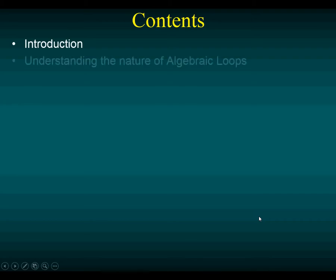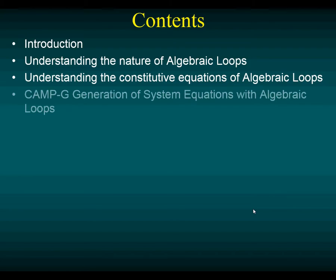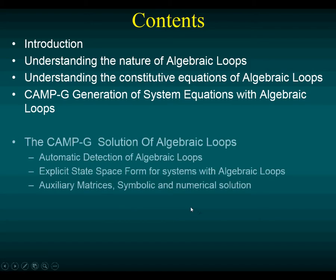First, I'm going to build an understanding of what algebraic loops are. Then we are going to look at what the constitutive equations of algebraic loops are — how does that happen. Then we have the CAMPG generation of a system of equations with algebraic loops, and we're going to propose a solution: first, the automatic detection of algebraic loops, then the explicit state space form for systems with algebraic loops, and what auxiliary matrices we need for doing either a symbolic or numerical solution.